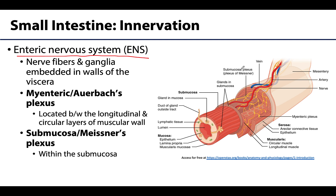The Meissner or submucosal plexus is composed of a ganglionic nerve plexus associated with the submucosa, whereas the Auerbach or myenteric plexus is located between the longitudinal and circular smooth muscle layers. These differ mainly in terms of location. Collectively, these plexuses are concerned with propulsion of contents through synchronized contractions as well as mucosal functions, and they are modulated by the autonomic nervous system.